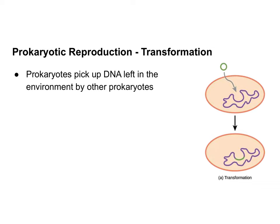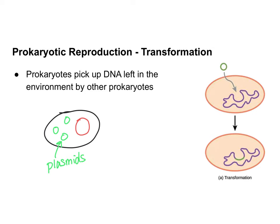Another way prokaryotes increase genetic diversity is that they're kind of messy when it comes to their DNA. A prokaryote has its chromosome and possibly some plasmids — small accessory rings of DNA not part of the main genome that may carry genes giving a survival advantage. Sometimes a bacterium leaves DNA out in the environment, and a different bacterium might pick up those plasmids or pieces of DNA and incorporate them into its genome, altering the original genome.